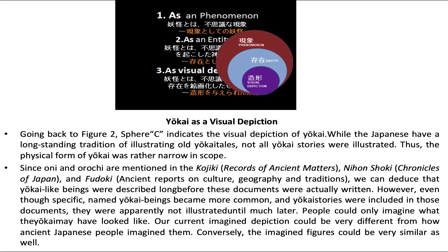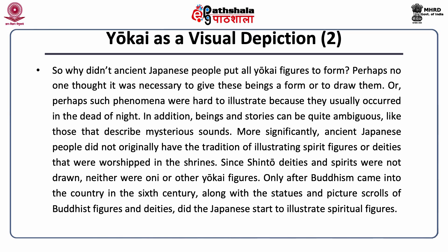However, even though specific named Yokai beings became more common and Yokai stories were included in documents, they were apparently not illustrated until much later. People could only imagine what the Yokai may have looked like. Our current imagined depiction could be very different from how ancient Japanese people imagined them, though conversely, the imagined figures could be very similar as well. Perhaps no one thought it was necessary to give these beings a form, or perhaps such phenomena were hard to illustrate because they usually occurred in the dead of night.